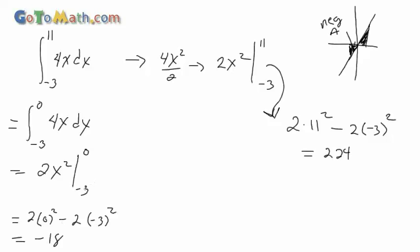Something else you could do is flip those bounds. But if you flip them you'd still end up with a negative number — to make both equal you'd have to throw a negative out in front. If you just want to end up with positive 18, flip those bounds and don't put a negative out in front. But anyway, since it's negative we take the absolute value and get 18. So this area over here is going to be 18 units squared.